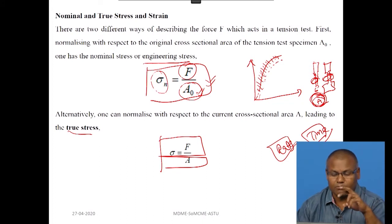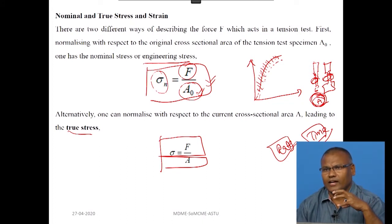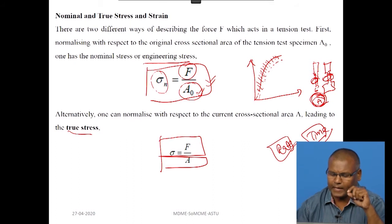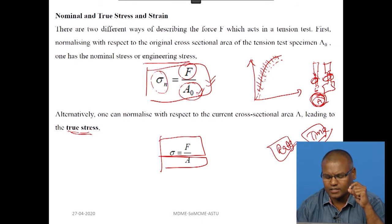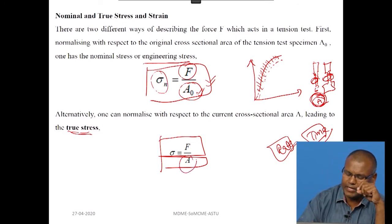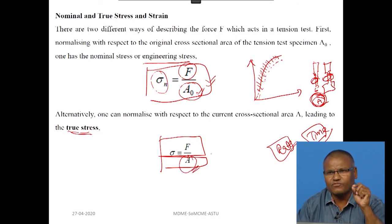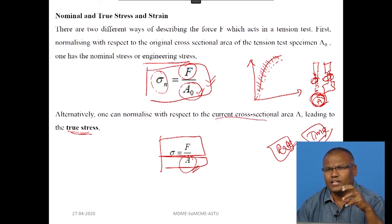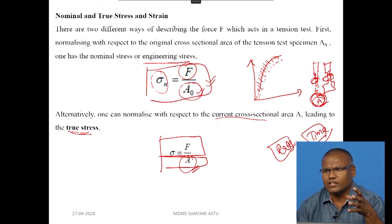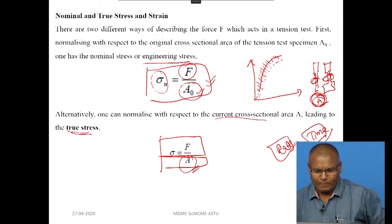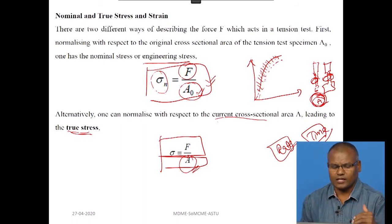Engineering stress may not give you a proper explanation. For that reason, we move to true stress, in which the area is calculated every time — it indicates the current cross-sectional area. The instantaneous area is taken to calculate the true stress of a material. That is how nominal and true stress are related.